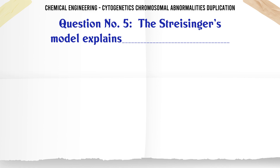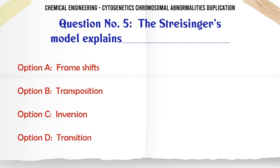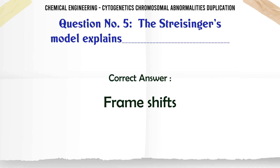The Streisinger model explains: A: frame shifts. B: transposition. C: inversion. D: transition. The correct answer is frame shifts.